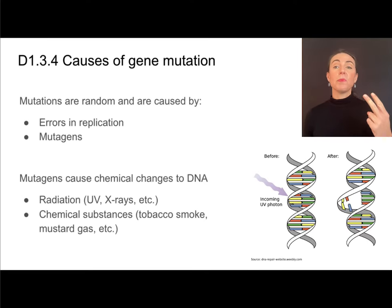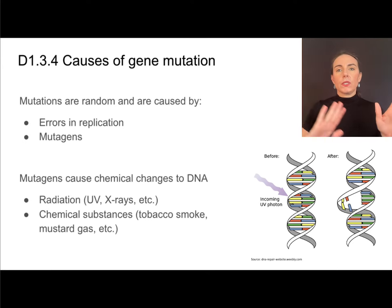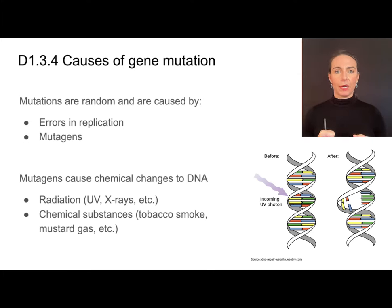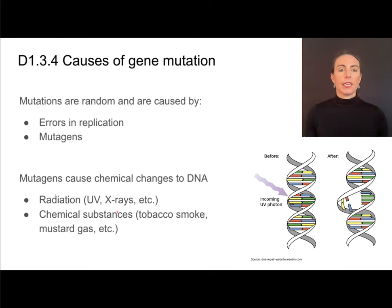There are two major causes of mutations. One is an error in replication — it's possible that the wrong nucleotide is laid down in that sequence. It does happen, but it's relatively rare due to the proofreading and complementary base pairing. Mutagens can also cause changes in the DNA base sequence. Mutagens are things like radiation or chemical substances that chemically cause different bases to be present in that DNA.